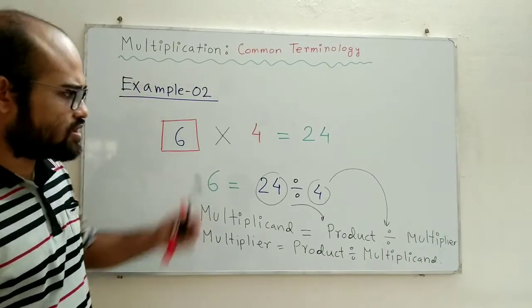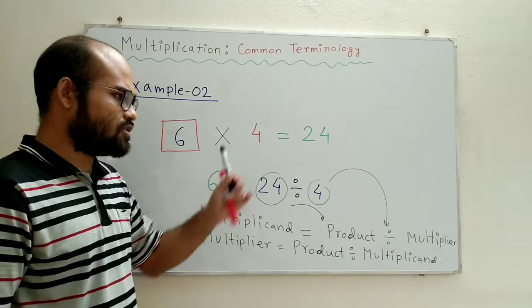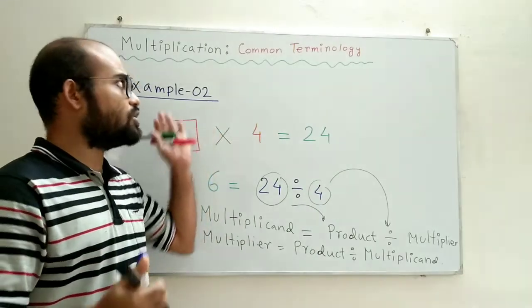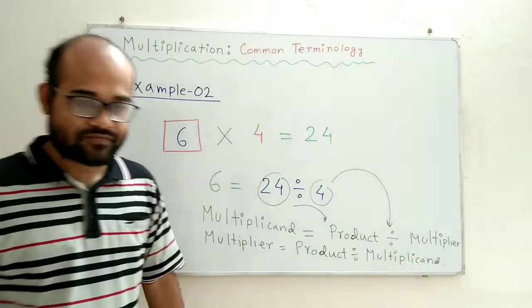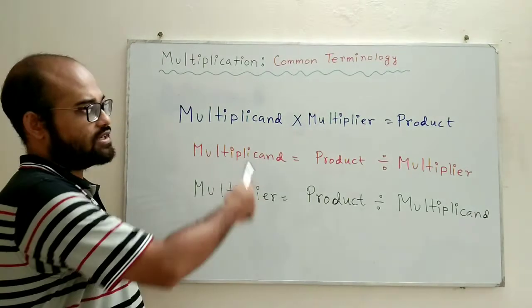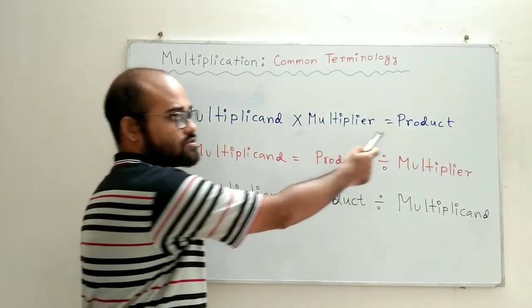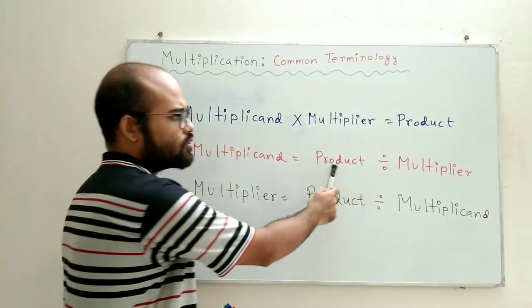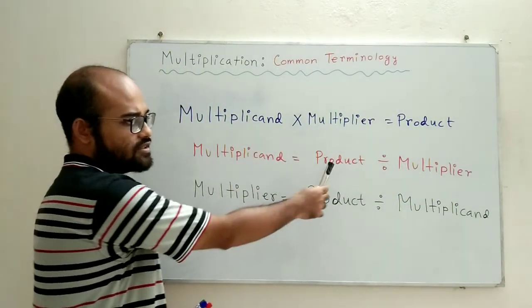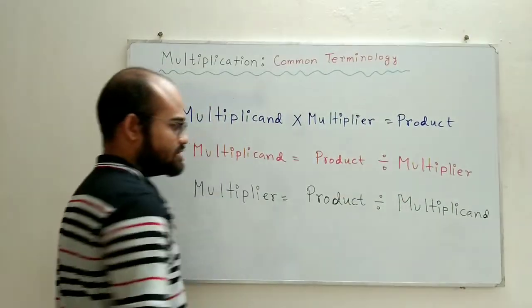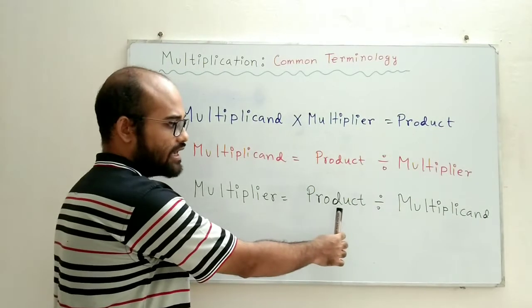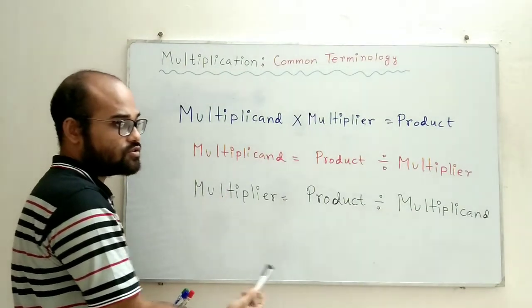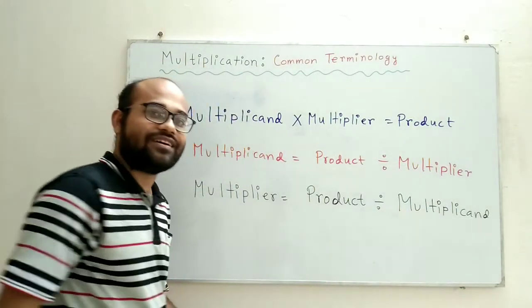So, we have reached almost at the end of our lecture. But before ending the lecture, we will have a quick recap of what we have learned. In this chapter, we have learned that multiplicand times multiplier gives us product. Now, if we know product and multiplier, how to find the multiplicand? Product divided by multiplier. Similarly, if the product and the multiplicand are given and we are asked to find the multiplier, we will have to divide product by the multiplicand.